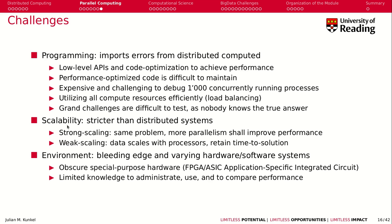The next challenge is scalability, which is harder than for distributed systems because performance is the primary concern. There are two scalability aspects: strong scaling, where you take the same problem and parallelize it further across more hardware — distributing it wider to hopefully increase performance. The second is weak scaling, where you increase the amount of work along with the number of processes to retain the time to solution. Weak scaling is much easier to achieve than strong scaling.